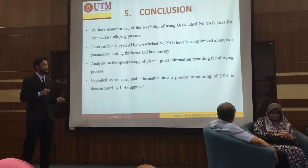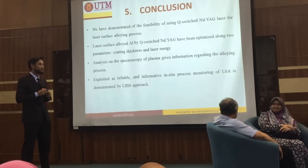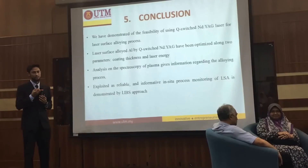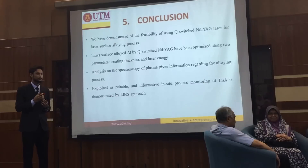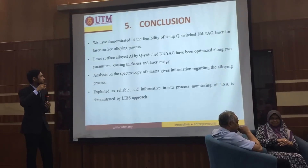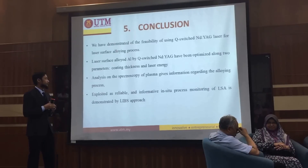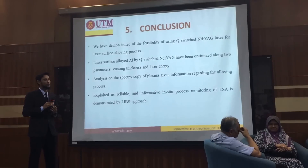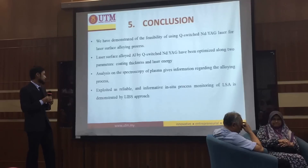In conclusion, we have demonstrated the feasibility of using a Q-switch Nd:YAG laser for the laser alloying process. Previously this laser caused vaporization and was considered destructive in nature, but I managed to use the same laser for alloying. I have optimized the laser surface alloying process based on two parameters: coating thickness and energy. The plasma formed on top of the aluminum surface was characterized, and the information from the process was correlated with the final alloying properties. That's all.